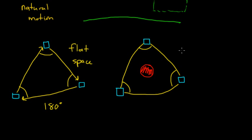And then if we measure these angles, we're going to notice that the sum of the angles that we get is going to be greater than 180 degrees. And this implies that our space-time is now curved.